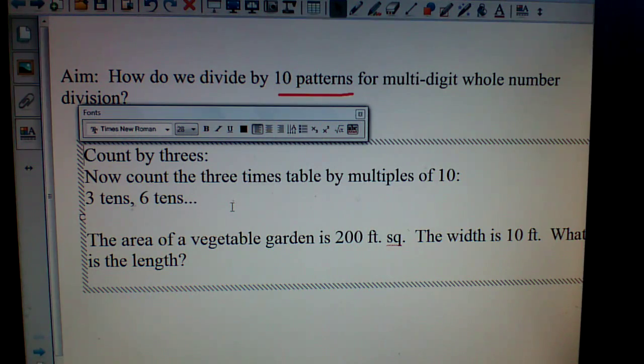So what I want you to do is count the three times table by multiples of 10. So it would be 3 tens, 6 tens, 9 tens, 12 tens. If you get to that point and you go all the way to the end of the three times table, and you have 36 tens, that would be where you would end for the multiples of 10 for our purposes.